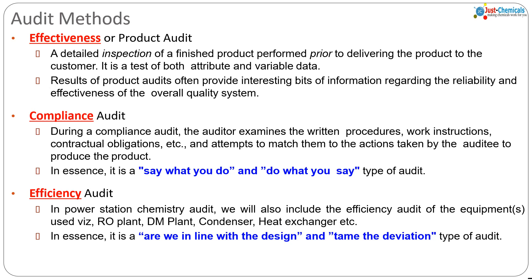Importantly, for all the above it is important that the power station chemistry department creates processes with SIPOC — that is, Supplier, Input, Process, Output, Customer table — and then builds processes with stages. It should have SOPs (standard operating procedures), OCPs (operational control procedures), work instructions, and documentation. These documents must be kept in a secured file, and the plant must shift from Excel sheets to software where data integrity is well maintained.